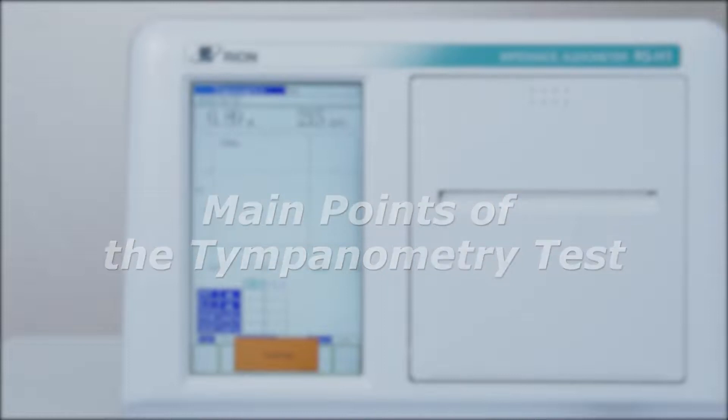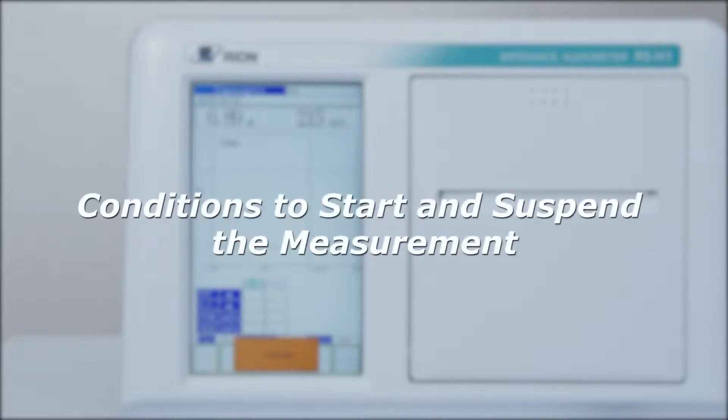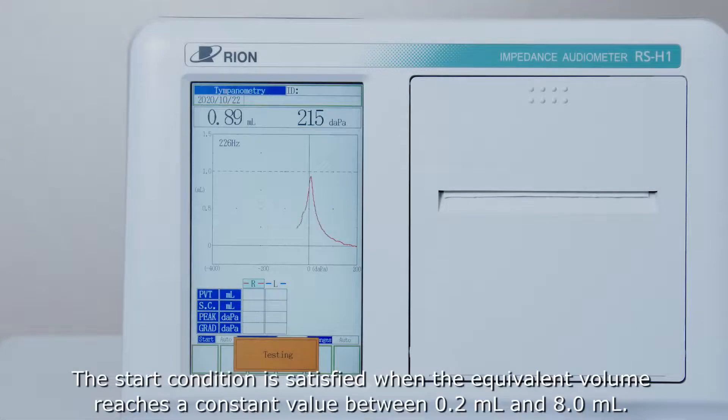Main points of the tympanometry test. Conditions to start and suspend the measurement. The start condition is satisfied when the equivalent volume reaches a constant value between 0.2 milliliters and 8 milliliters.